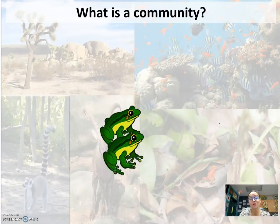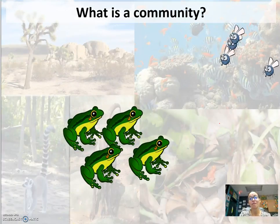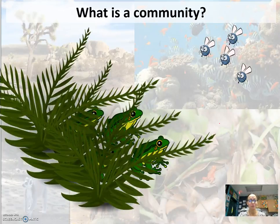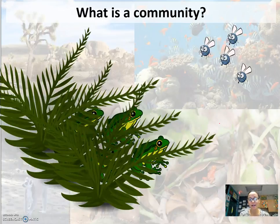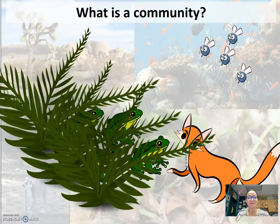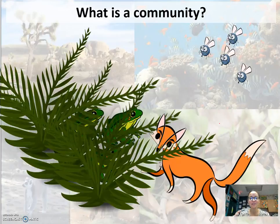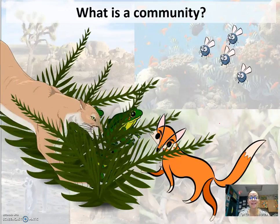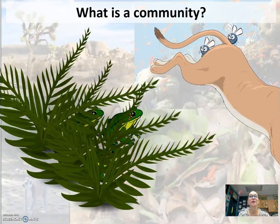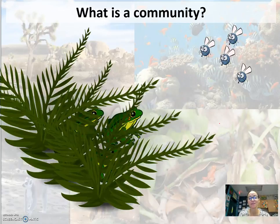So what is a community? You have a population of frogs and a population of flies, and how they interact is part of a community. Here's two different populations — one is a predator and one is prey. You also have plants as part of the community. The frogs use those plants for camouflage and hiding. The frogs themselves are prey for foxes. A community makes up all the different populations and how they interact together — not just predator-prey, but how resources like plants are used.